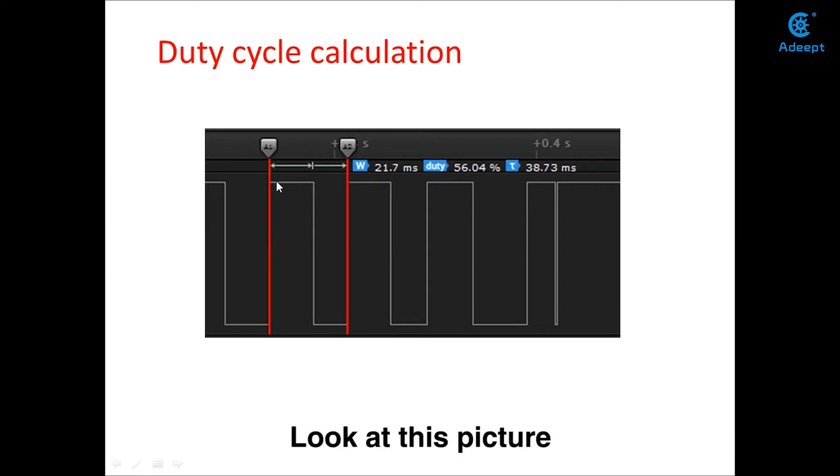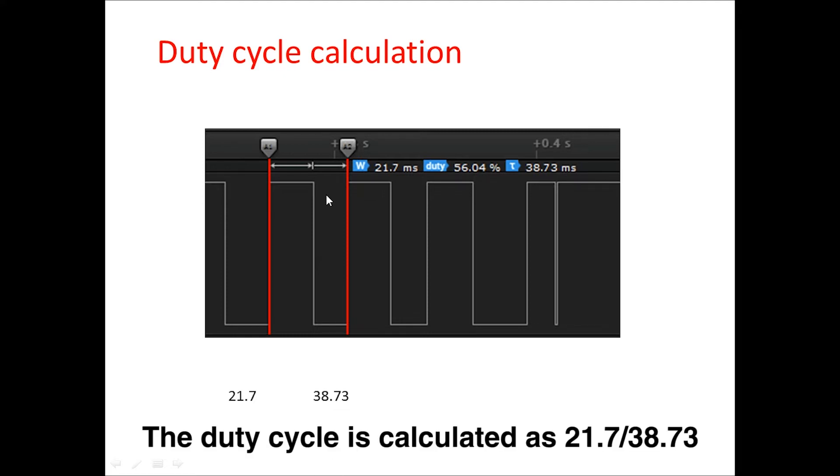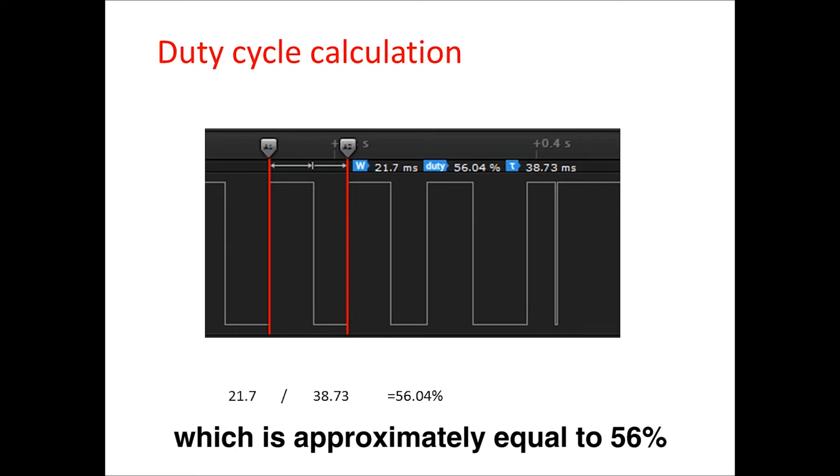Look at this picture. The high level occurs for 21.7 ms and the pulse period is 38.73 ms. The duty cycle is calculated as 21.7 ms divided by 38.73 ms, which is approximately equal to 56%.